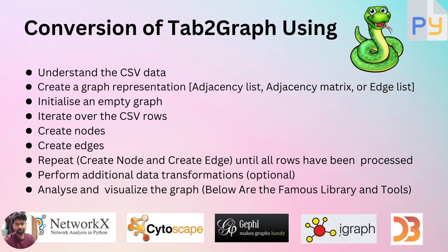We repeat the process of creating nodes and edges for each row in the CSV until all rows have been processed successfully, ensuring that the graph captures all the relationships described in the data. At this stage, we can perform additional data transformations or pre-processing on the graph if needed. This may include applying filters, aggregating data, or computing additional attributes based on the graph structure.